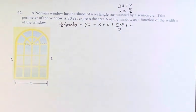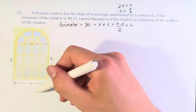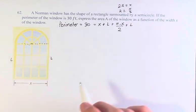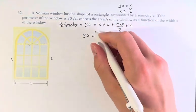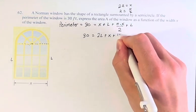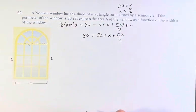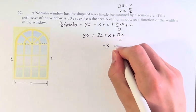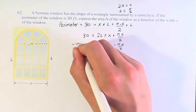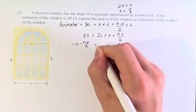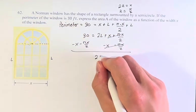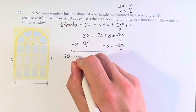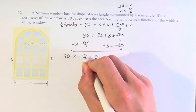How is this going to help us get the area? Well, we can find the area as is in terms of x and L, but we only want it in terms of x. So we have to solve for L in this equation. So 30 is equal to 2L plus x plus pi times x over 2. Then we subtract x, and we subtract pi times x over 2 from both sides. These cancel.